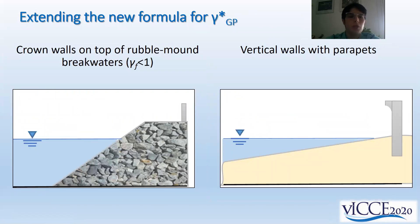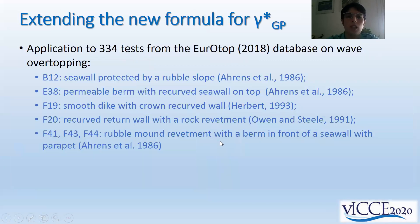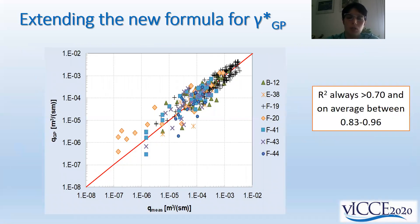Due to the promising results and good performance of this coefficient, we aimed at extending it to structures characterized by gamma_f lower than one — namely rubble mound breakwaters with crown walls and vertical walls with parapets. To this purpose, we selected a number of datasets from the EurOtop database on wave overtopping including these structure types, and directly applied our new coefficient in the EurOtop formula for the prediction of Q.